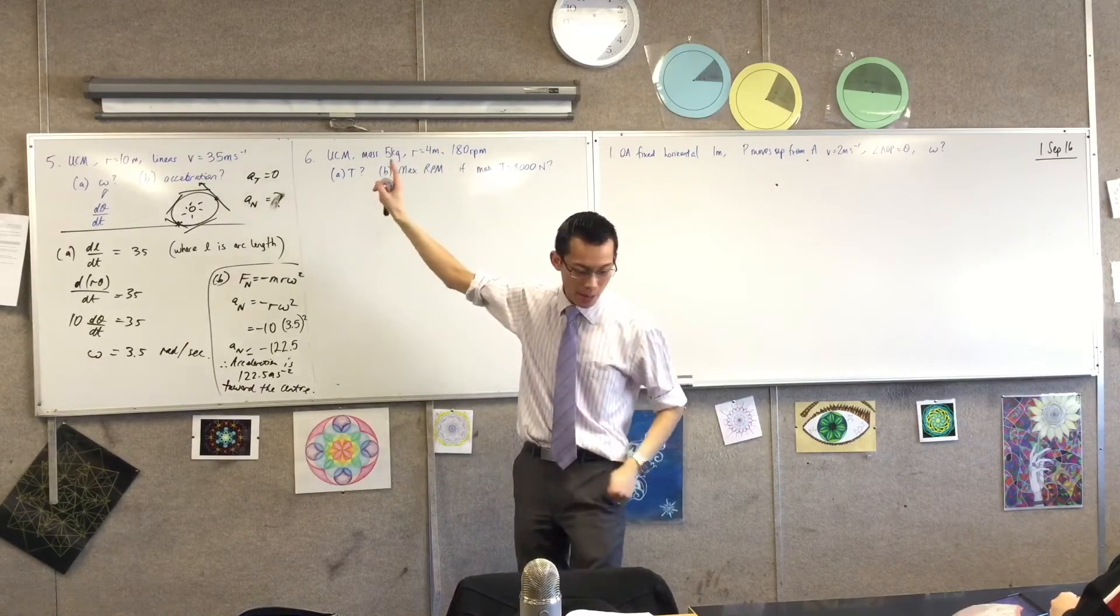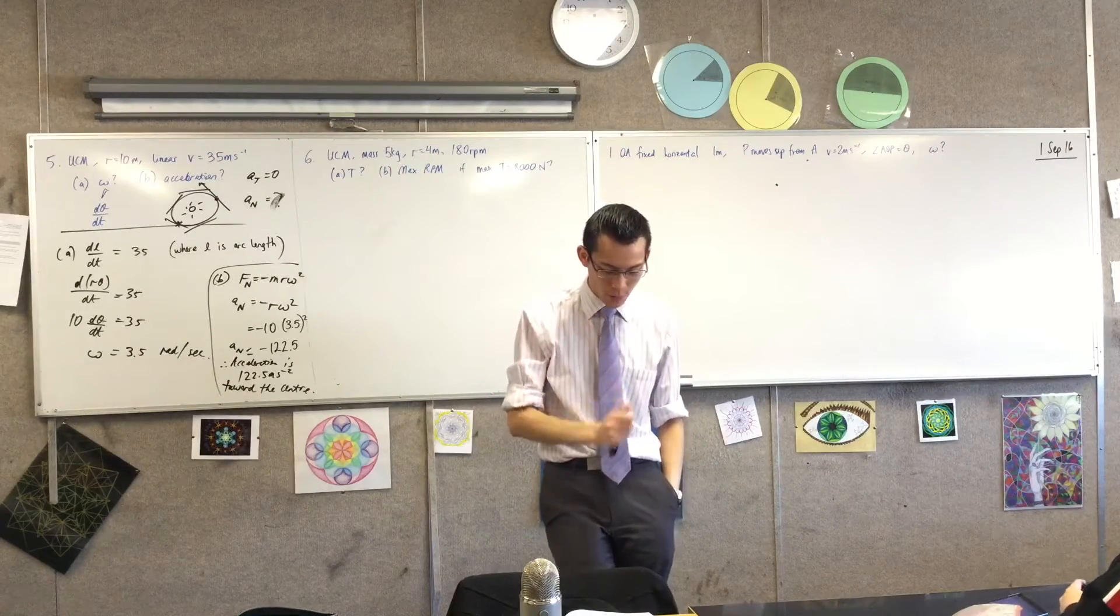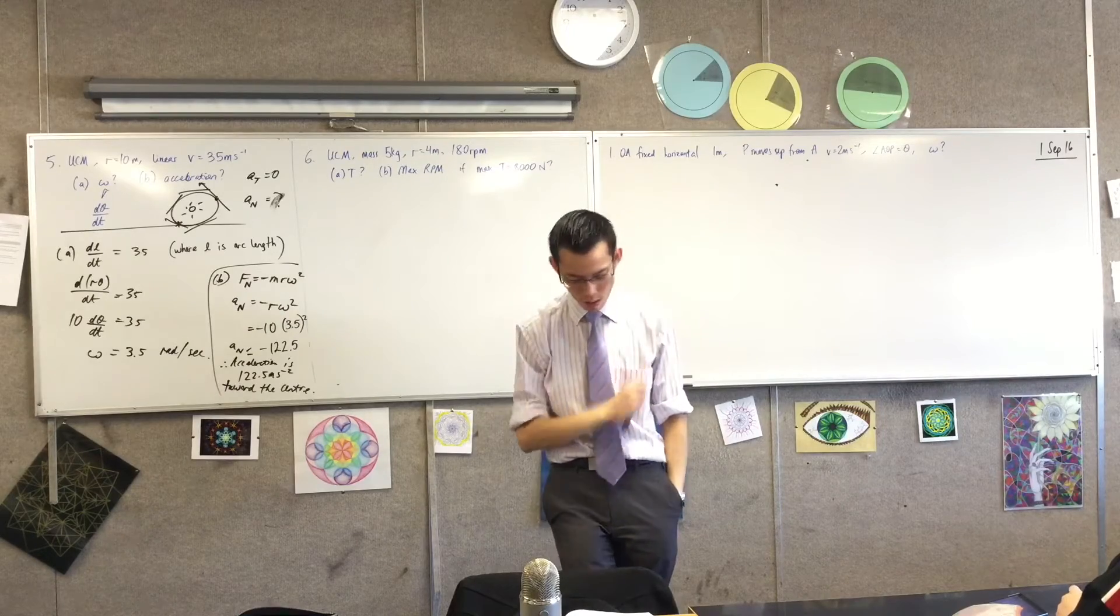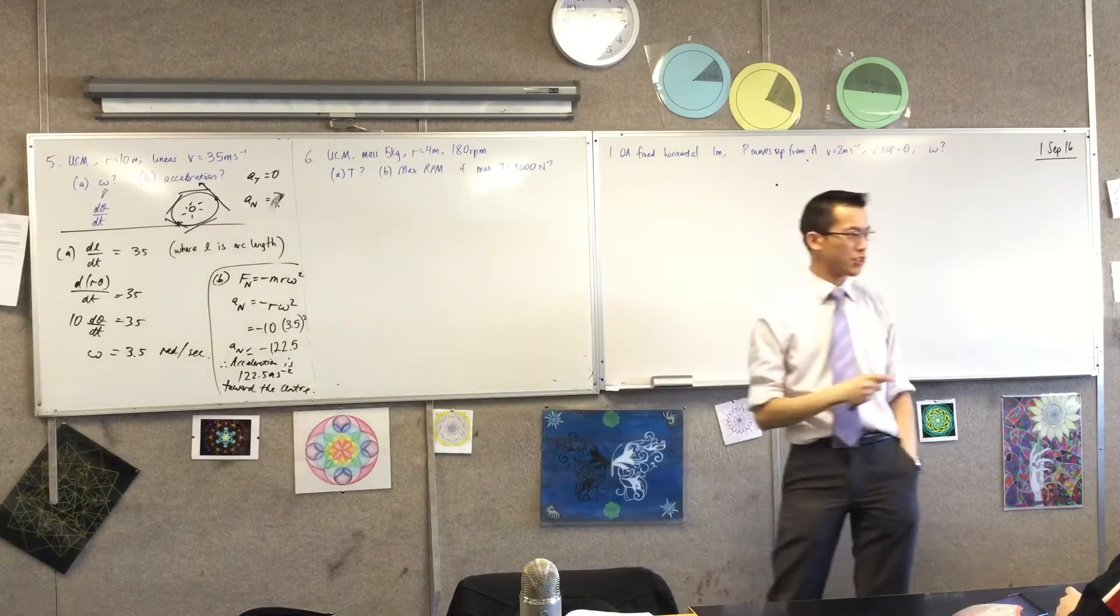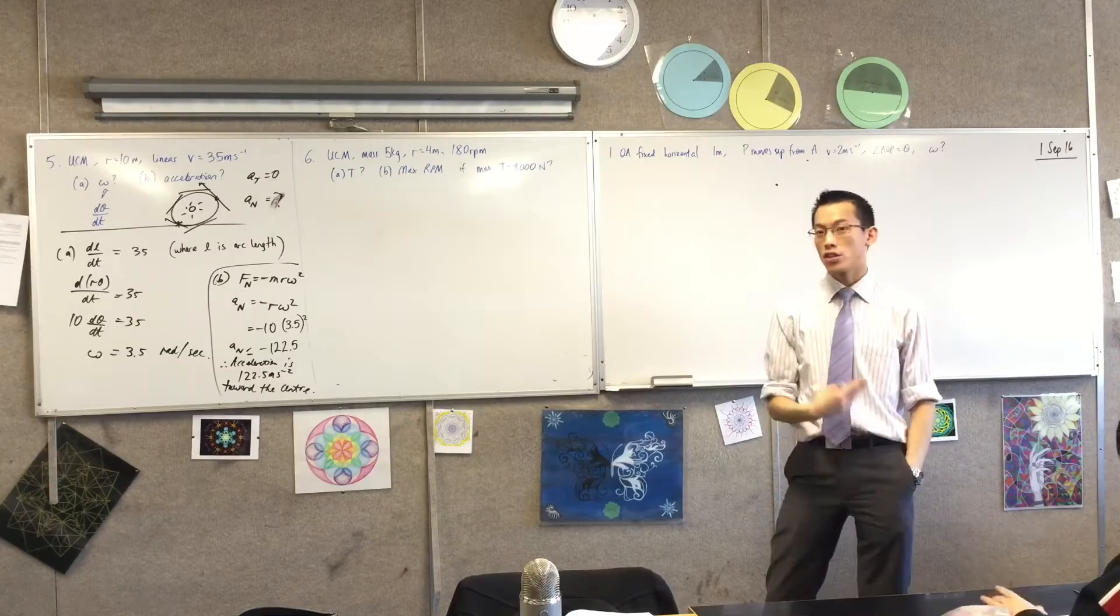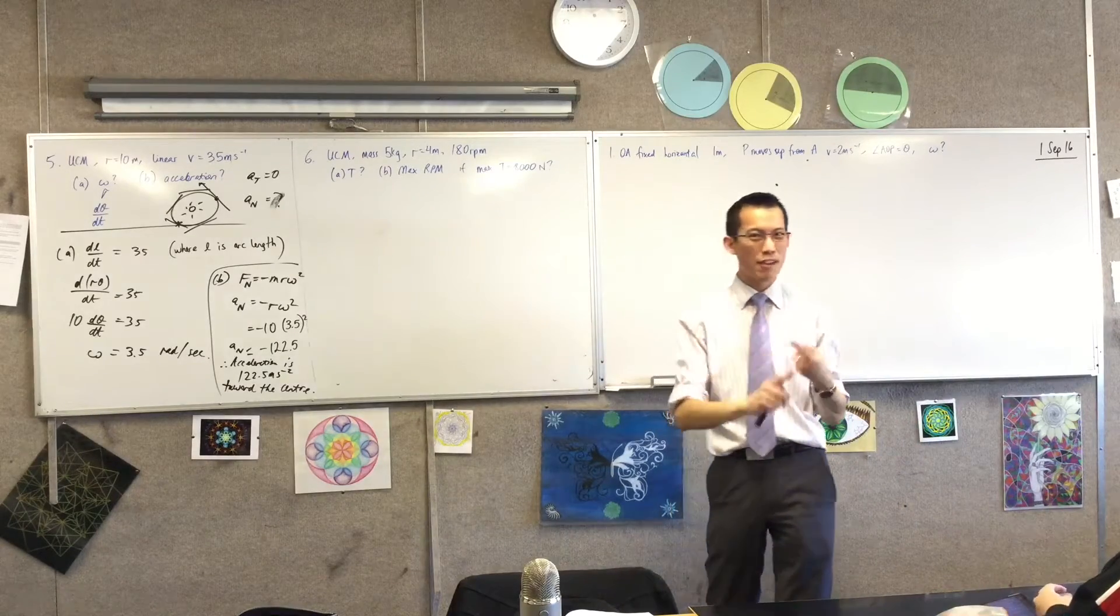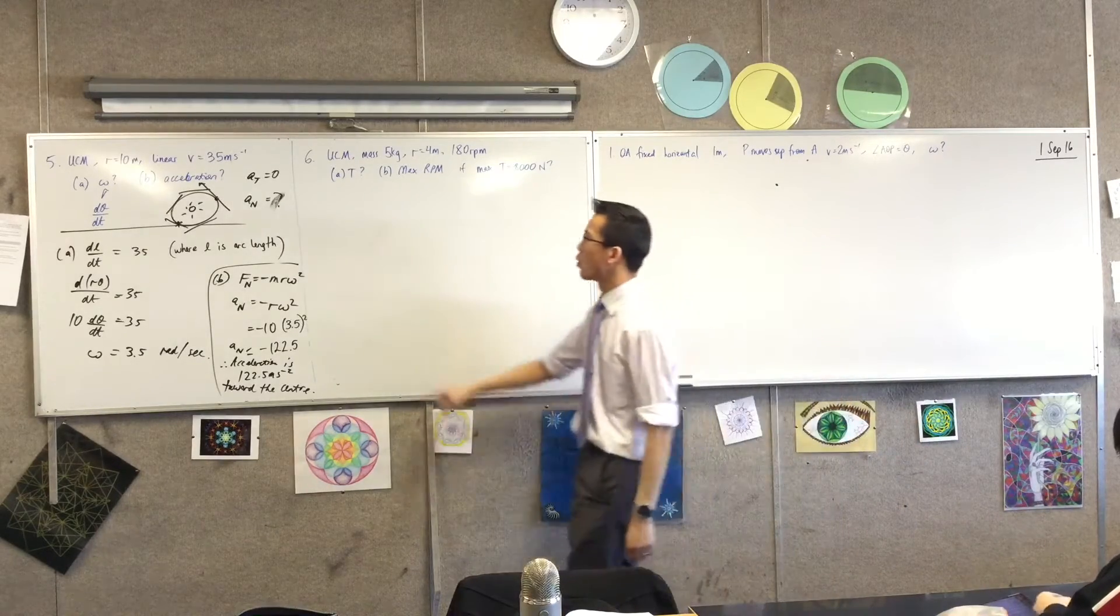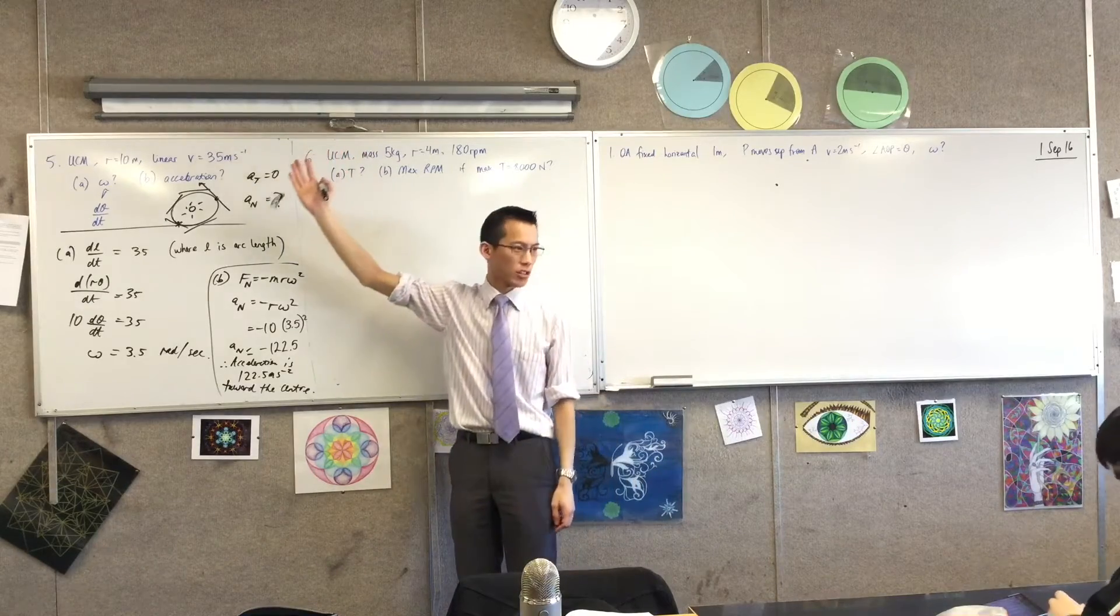Particle of mass 5 kilograms moves in a circle of radius 4 meters on a smooth horizontal surface. Okay, before we read the rest of the question, that word smooth - what that indicates is there's no friction, no friction, which is why I can say it's going to be uniform circular motion.